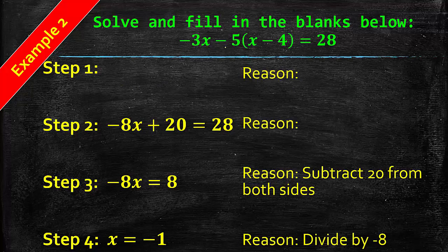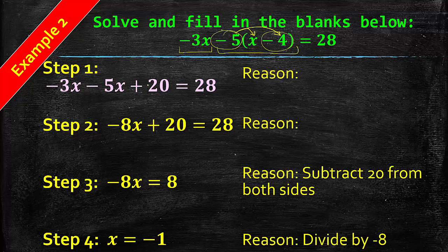We have negative 3X minus 5 times the difference of X and 4 equals 28. Negative 3X, we're not going to worry about anything with that because there's no grouping symbols with that. But there is grouping symbols here with this X minus 4. The first thing we're going to do is distribute the negative 5 to the X and to the minus 4. That's going to give us negative 3X minus 5X plus 20. Remember, include the symbol to the left. We have negative 5 times negative 4, that's how we got the positive 20 equals 28. The reason that we have this is because we distribute.